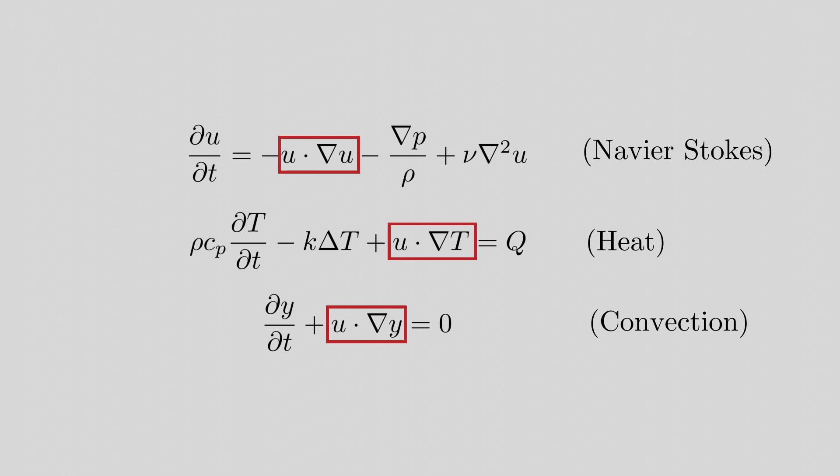This term is responsible for the advection of some variable given a velocity field, and the semi-Lagrangian advection scheme is a numerical method that can be used to calculate it.